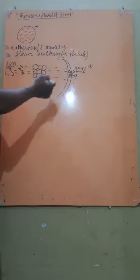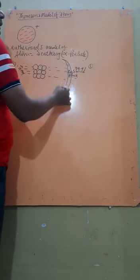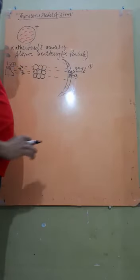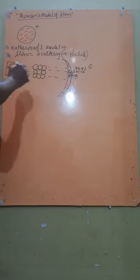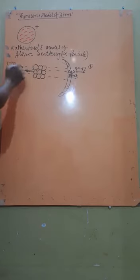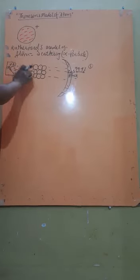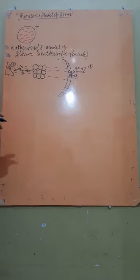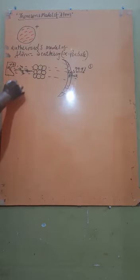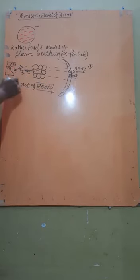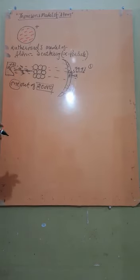The second observation was that some of the particles, when they strike, they deflect to different directions — that is, they strike here and there — but their quantity is very, very less. The third observation was that some of the particles come back to the opposite direction — that is, completely reverse back — and its quantity is very, very less: one out of 20,000. That is, if 20,000 particles strike, only one particle reverses back.